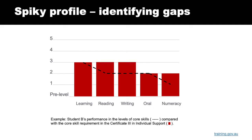On to this we've mapped the dotted line showing a student's existing skills: level 3 learning, level 2 reading, level 2 writing, level 2 oral communication, and level 1 in numeracy. As soon as you look at this you can see where the gap is — in reading, writing and numeracy the student is operating at a level lower than what will be needed to complete the Certificate 3 in Individual Support. This can be a really good way to identify gaps and where the student might need some preliminary or ongoing help.